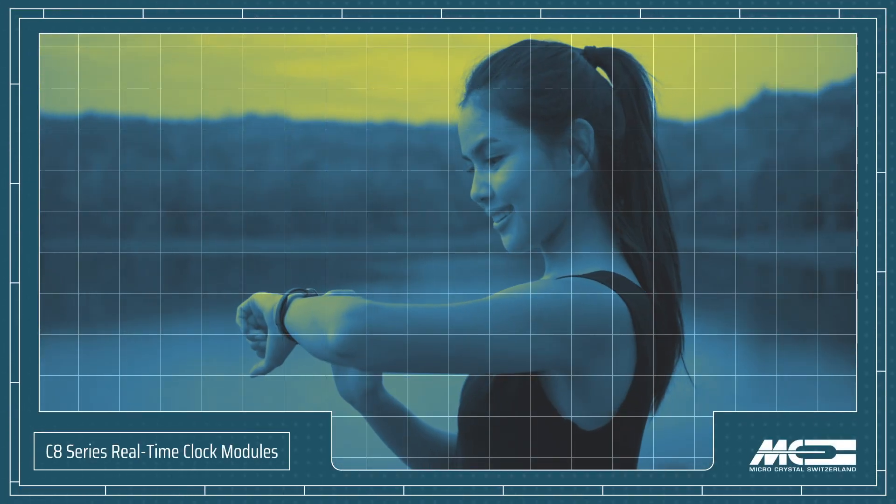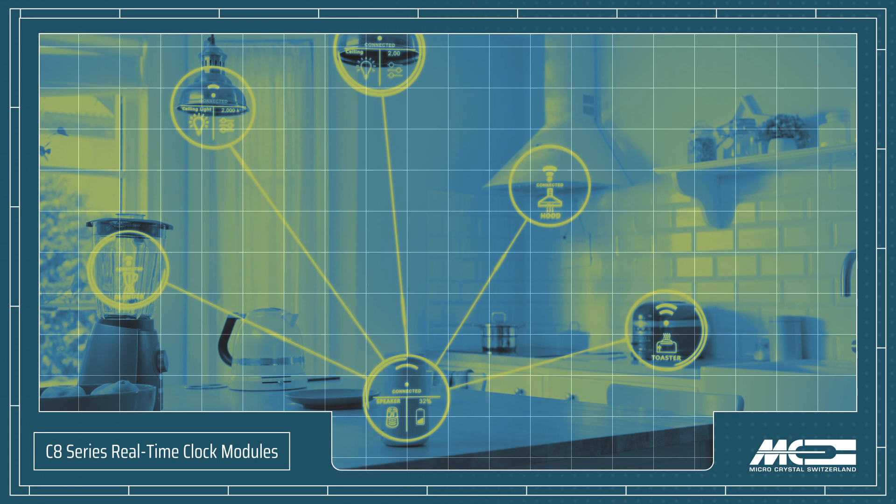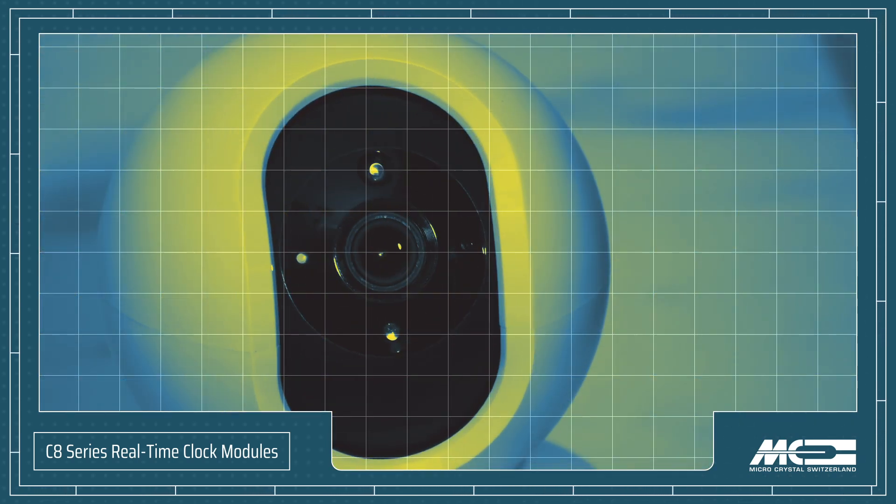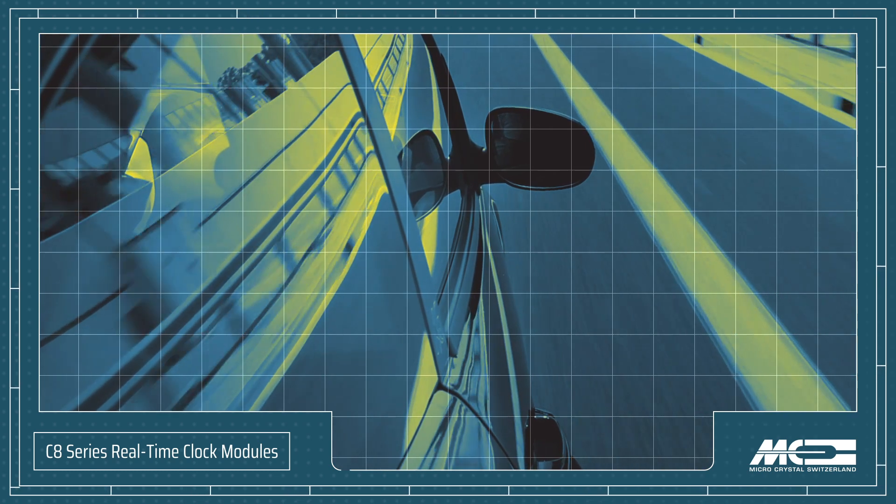MicroCrystal C8 Series real-time clock modules feature an ultra-small package that helps enable smaller and lighter designs for wearables, portables, IoT, metering, healthcare, automotive, and industrial applications.